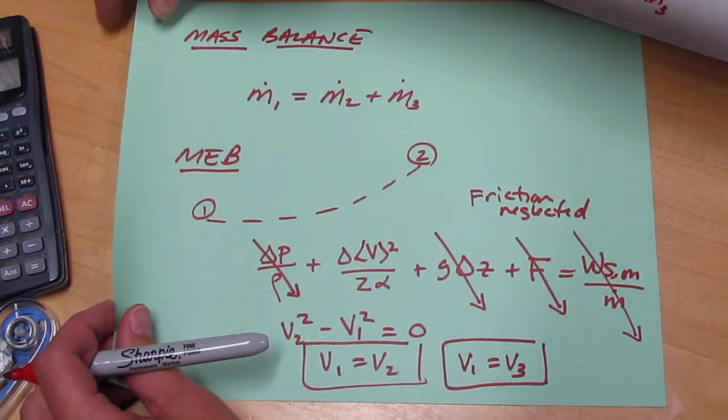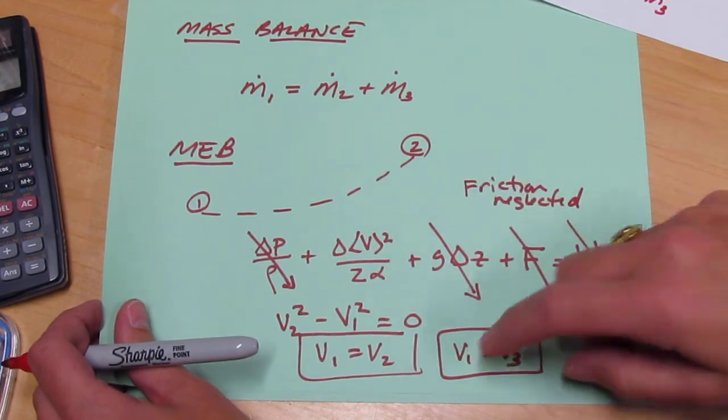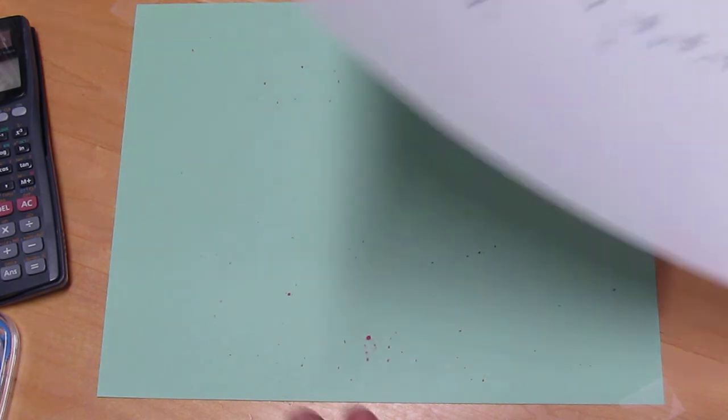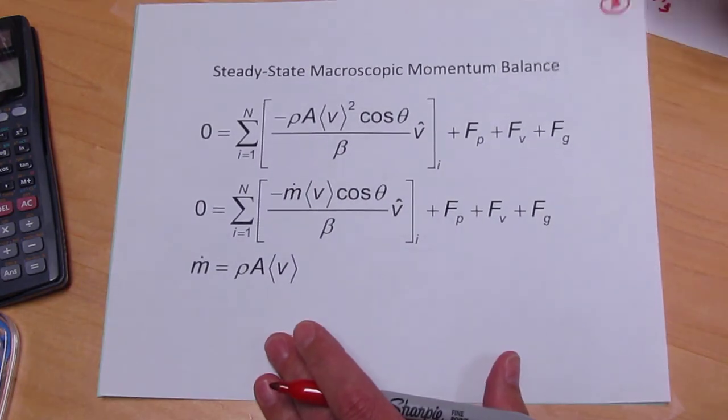So we have two facts so far. This mass balance and the fact that the velocity is constant. And the remaining physics we can apply to this situation is that momentum is conserved.